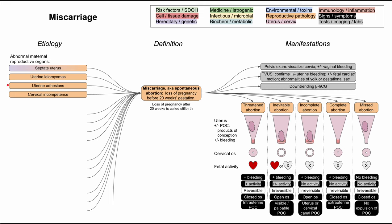The first category — perhaps the most rare — is abnormal maternal reproductive organs. A septate uterus is one cause. Uterine leiomyomas, also known as fibroids, is another. Uterine adhesions can occur from previous infections or surgical procedures in the uterus. Cervical incompetence can also result from previous infections or surgical processes in the uterus.